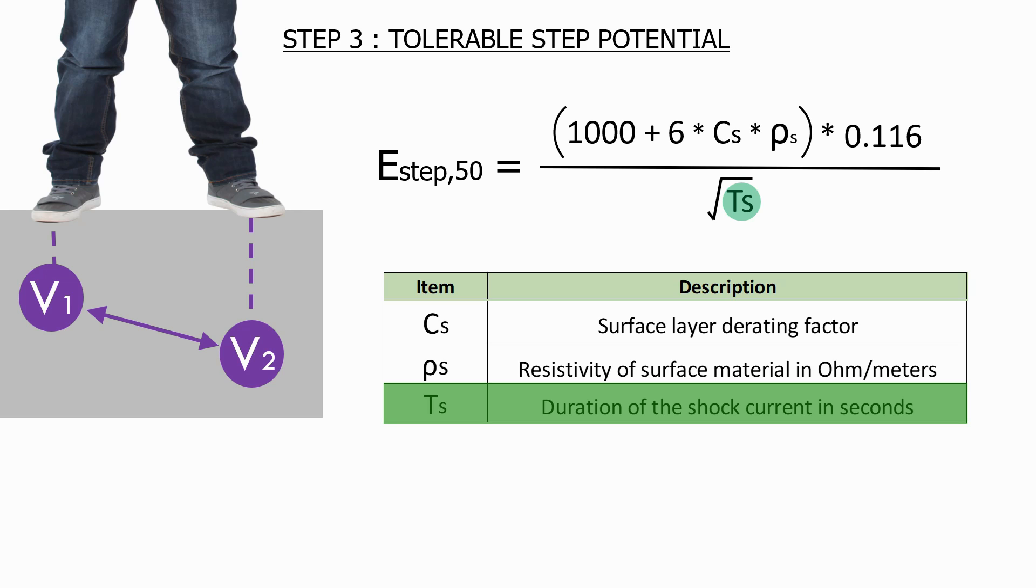CS and ρs we know about, what about the duration of the shock current? Well, this is the maximum amount of time that a fault current will be in place. Most modern substations will detect and clear the fault very quickly, usually in one or two hundred milliseconds.